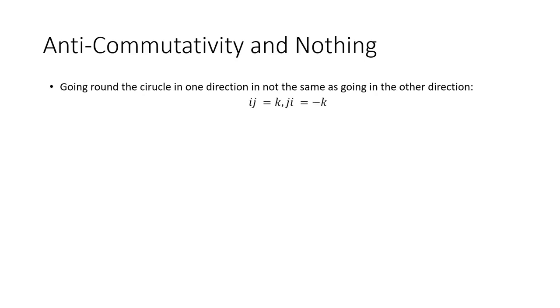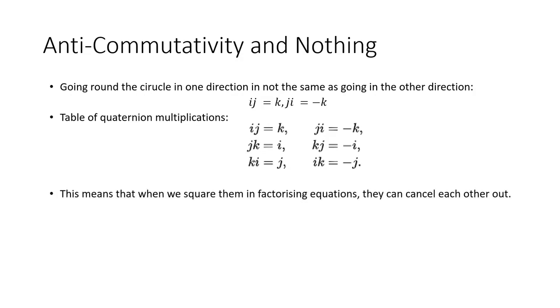But even more interesting is the fact that if you reverse their order they don't produce the same result, which is completely unlike how we normally think about multiplication. We think that multiplication is commutative and the Quaternions are anti-commutative. It's this anti-commutativity which makes Peter's equation work.